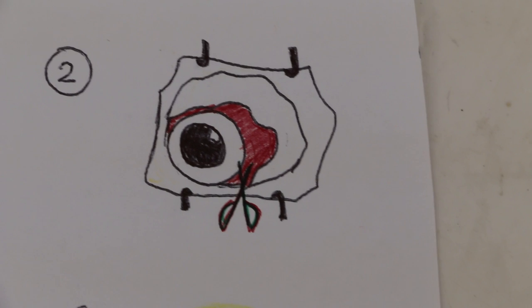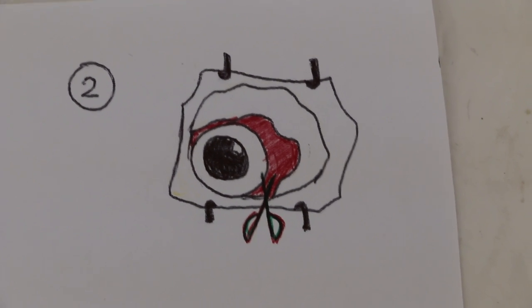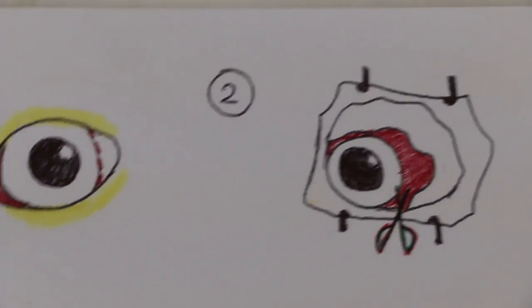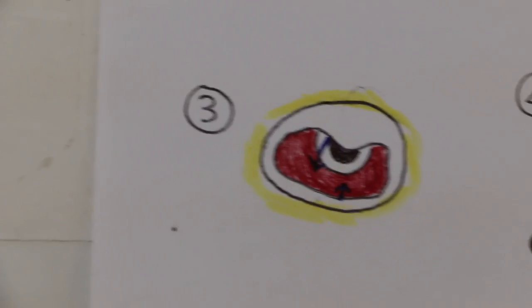Number two, you see the further dissection, and it goes round the limbus, 360 degrees. It's called 360 degrees flap, limbus flap.